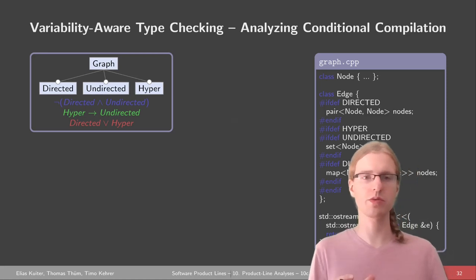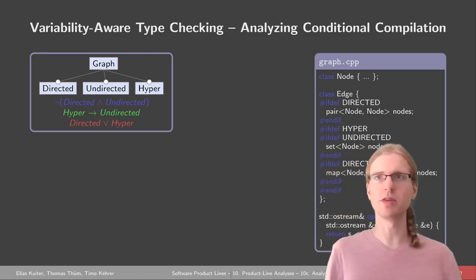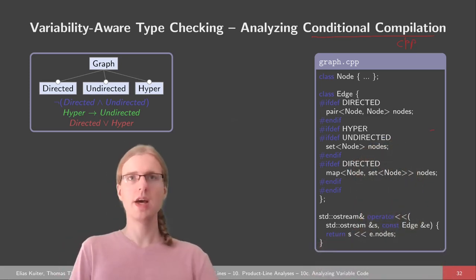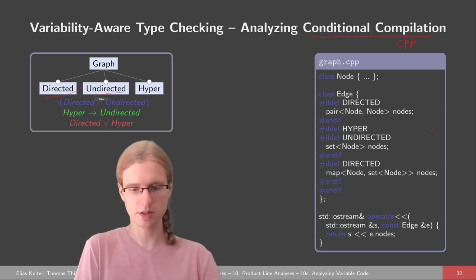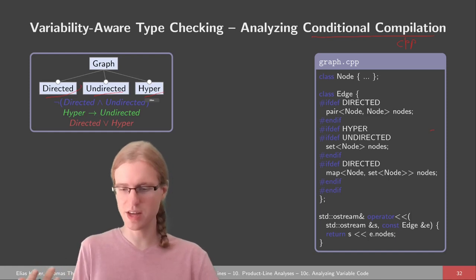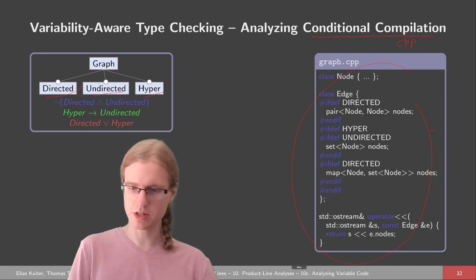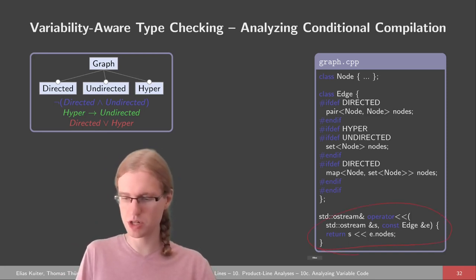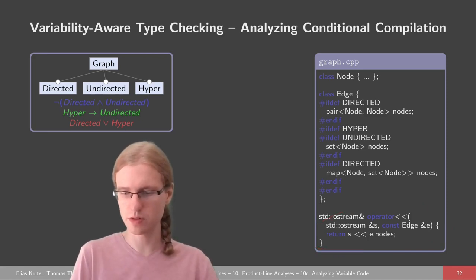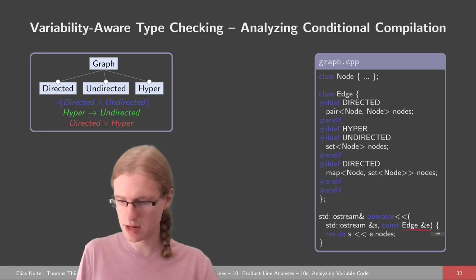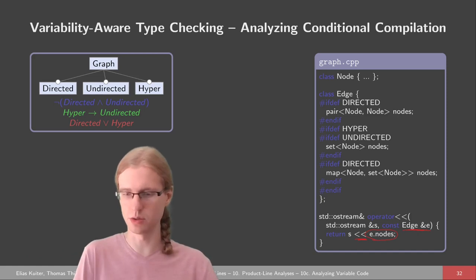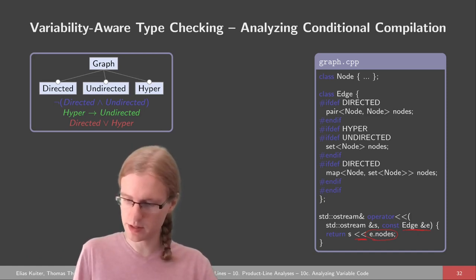We've seen how this works for feature-oriented programming. It gets a little more involved when we look at conditional compilation with the C preprocessor. Again, we have the graph example. The graph can be directed, undirected, or a hypergraph, or it can have hyperedges. I added a small operator here — C++'s printing operator — which takes an edge and outputs it to the standard out stream. It uses the nodes of an edge, so if you want to print an edge to the command line, you need its nodes. And this 'nodes' here is a reference, which must always be defined.